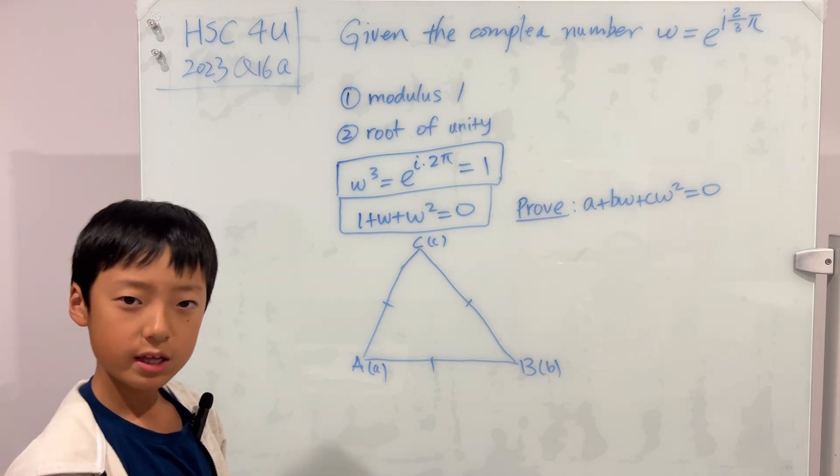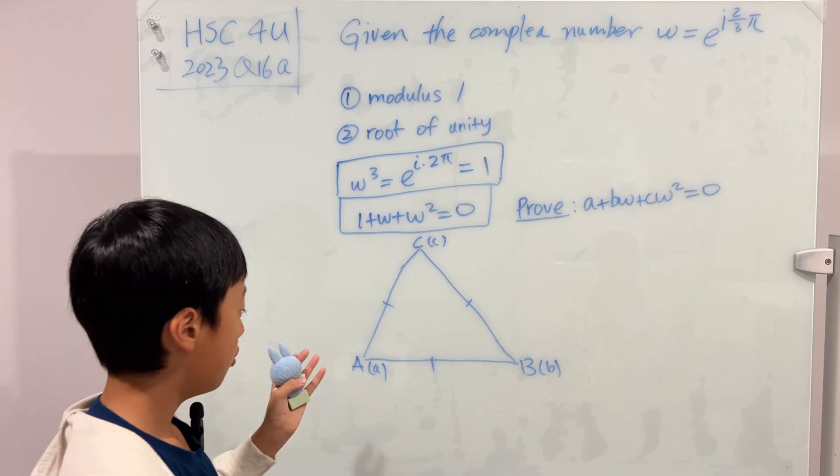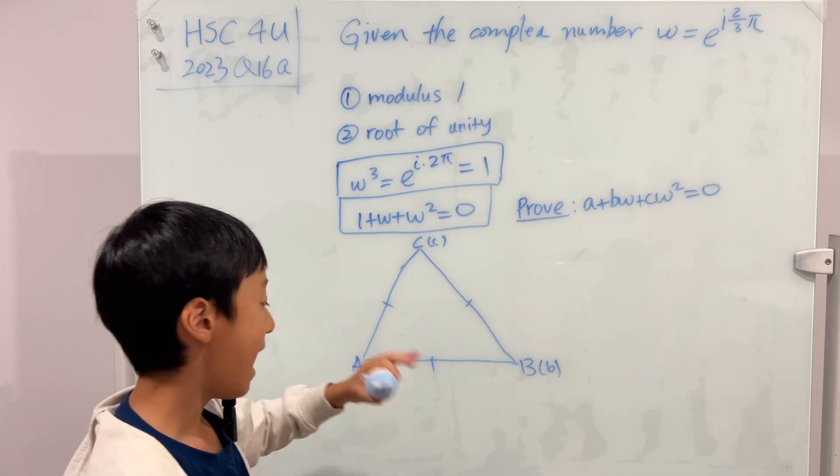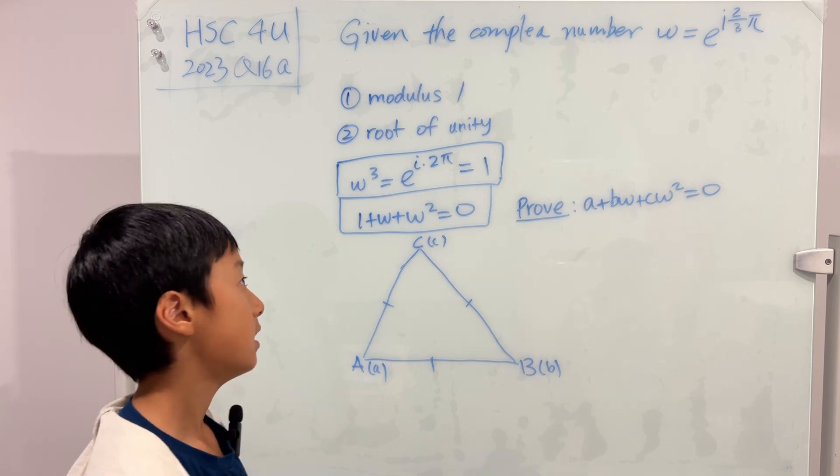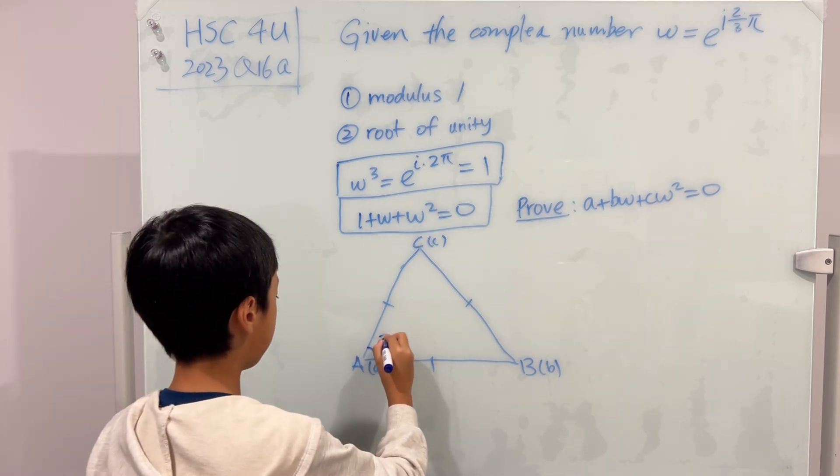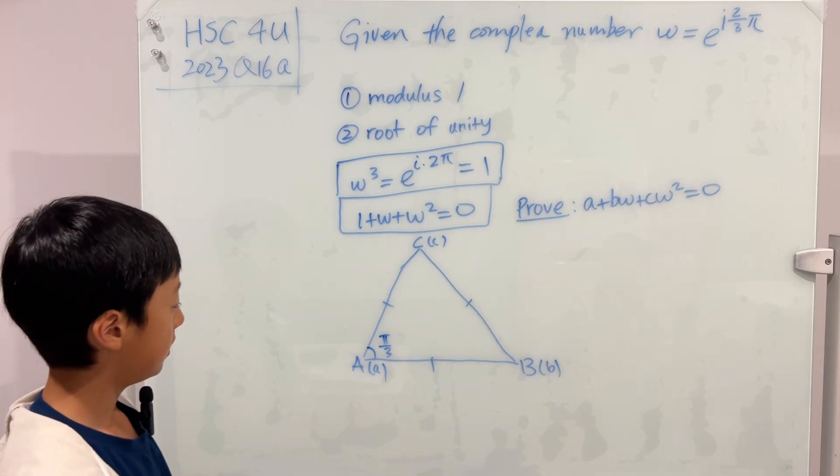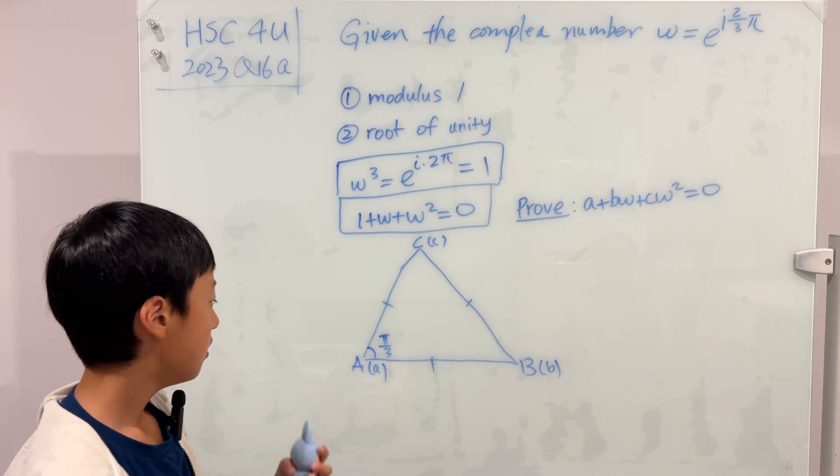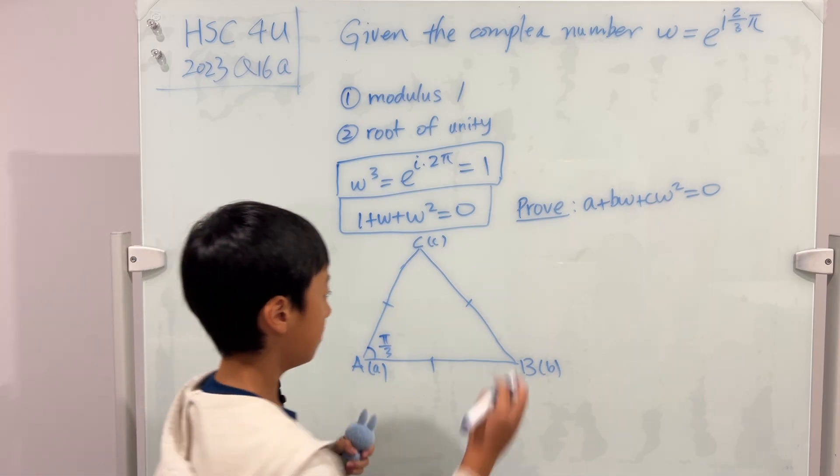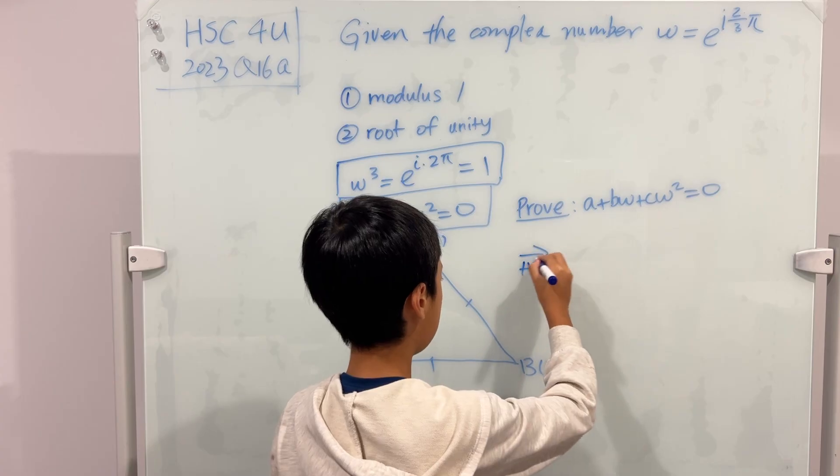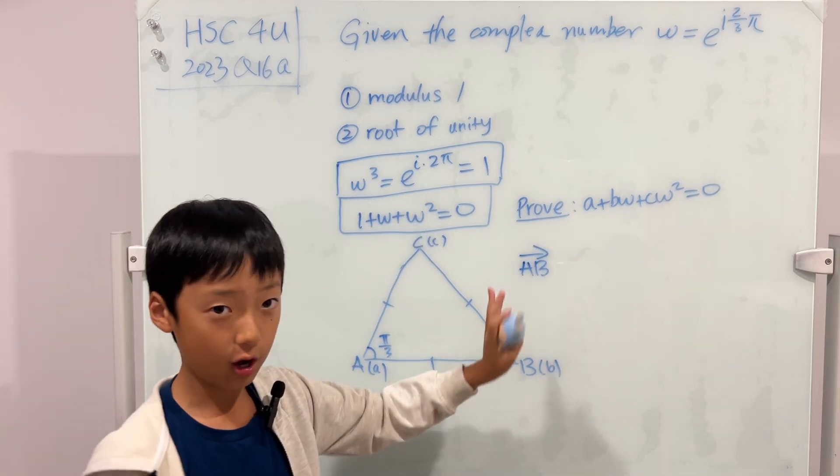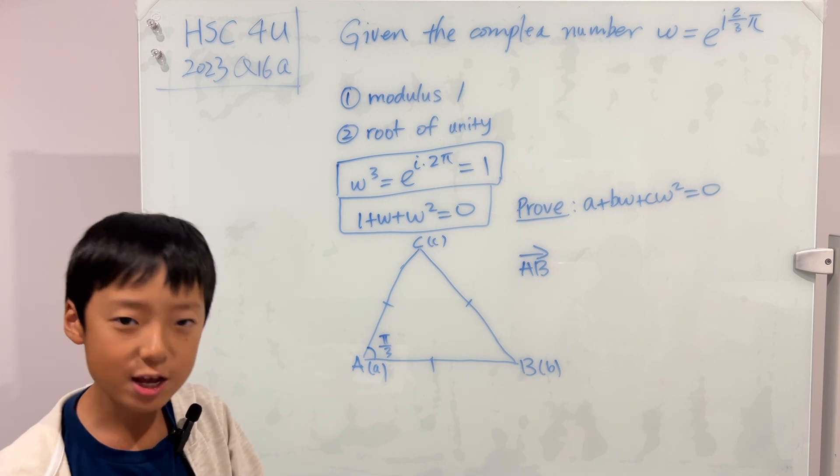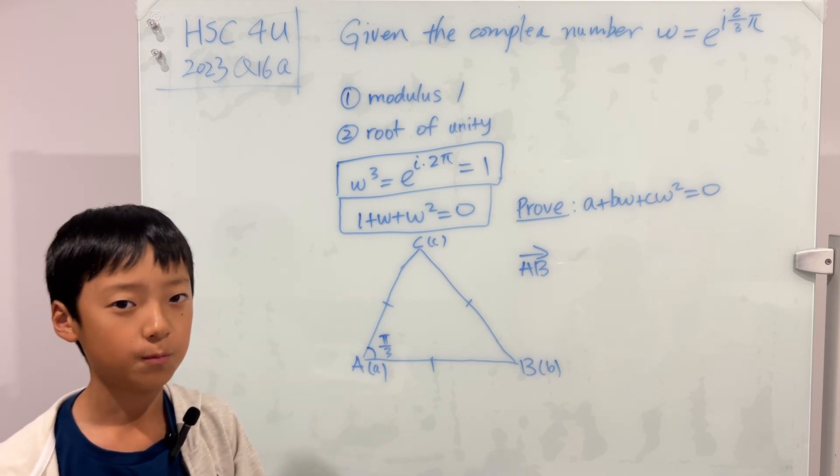So let's see. If you multiply w to any complex number, then this will mean rotating that complex number 2 over 3 pi anti-clockwise. So this is an equilateral triangle, so every angle is pi over 3. Right? This is pi over 3, and that is 2 over 3. So that implies that maybe we should multiply ab by w. And just a note, this is not a vector, this is a complex number. And another note, complex numbers and 2D vectors are isomorphic. More about that at the end of the video.